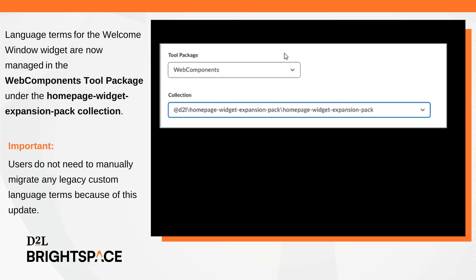Language terms for the Welcome Window widget are now managed in the Web Components Tool Package under the HomePage Widget Expansion Pack collection. The update to the Web Components Tool Package automatically migrates all custom language terms from the Legacy Language Pack to the new HomePage Widget Expansion Pack collection. Users do not need to manually migrate any legacy custom language terms because of this update. Previously, custom language terms for the Welcome Window widget were managed using the Welcome Window Tool Package.